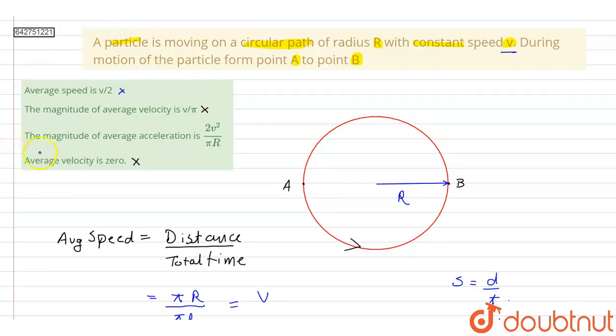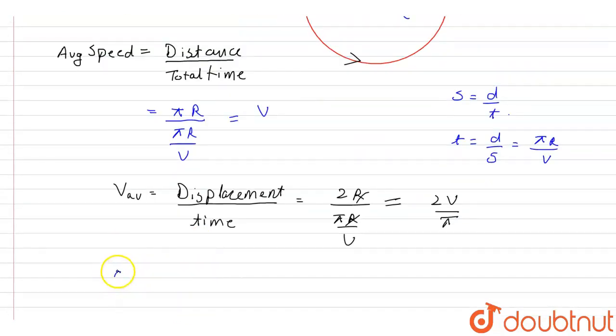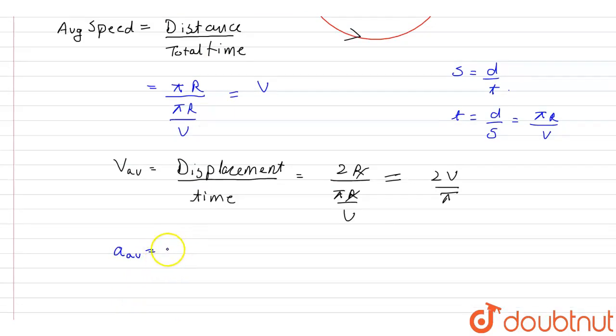Now option C is magnitude of average acceleration is 2V squared upon pi R. So let us calculate average acceleration. Average acceleration is given as final velocity minus initial velocity divided by time.